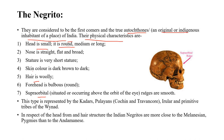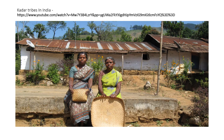Hair is woolly, forehead is bulbous, and supraorbital ridge — meaning the area occurring above the orbit of the eyes — is smooth. In the picture you can see what a supraorbital ridge looks like. These types are represented by Kadars, Puliyans, Irulas, and primitive tribes of the Wynad. Here you can see pictures of Kadar tribe women, Puliyans, and Irulas.